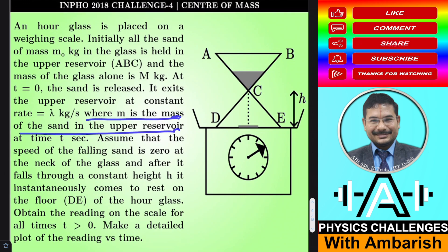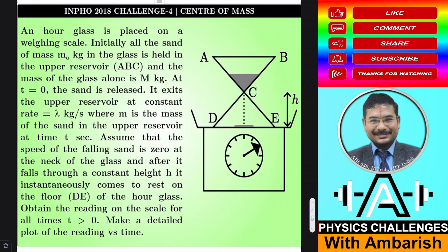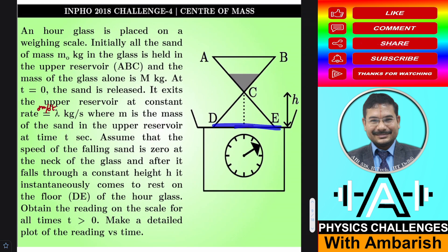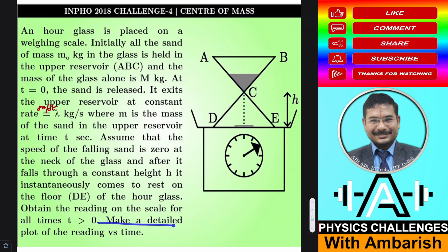Where m is the mass of the sand in the upper reservoir at time t seconds, dm/dt = λ is the rate of fall. Assume that the speed of the falling sand is 0 at the neck of the glass, and after it falls through a constant height h, it instantaneously comes to rest on the floor of the hourglass. So just assume it forms a heap on the floor level. Obtain the reading on the scale for all times t > 0. Make a detailed plot of reading versus time. I will get into my analysis right away.